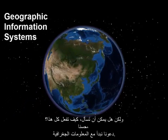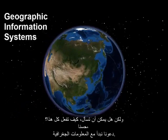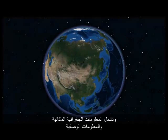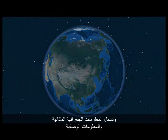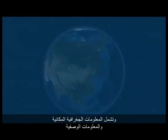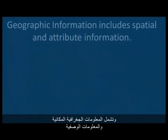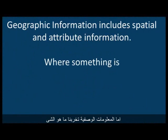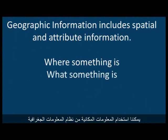But you may be wondering, how does it do all of this? Well, let's start with geographic information. Geographic information includes spatial and attribute information. The spatial information tells us where something is, and the attribute information tells us what something is.